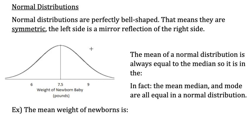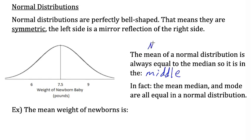In this lesson, we dive into the world of normal distributions and discover their importance. First of all, the mean of a normal distribution is always equal to the median, so it is in the middle. We have an abbreviation for the mean — that's the Greek letter mu. In fact, the mean, median, and mode are all equal in a normal distribution.